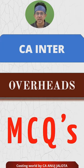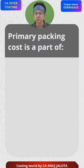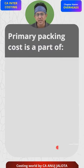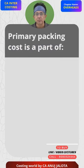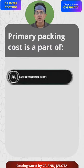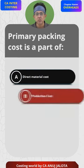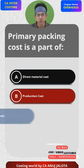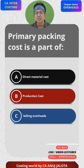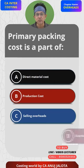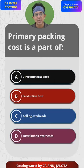Center overheads — MCQs. Primary packing is part of: A) first direct material cost, B) production cost, C) selling overheads, or D) distribution overheads.